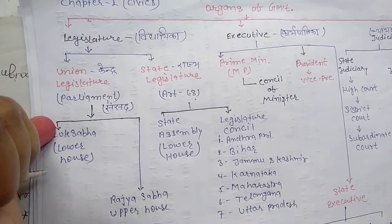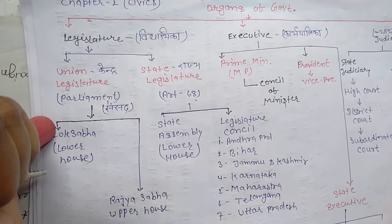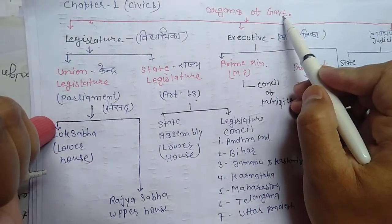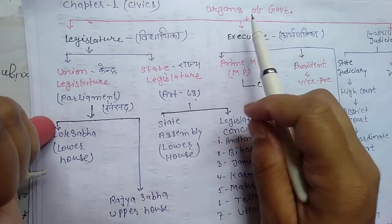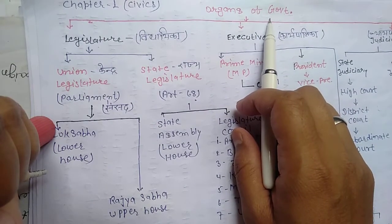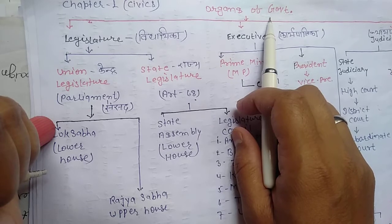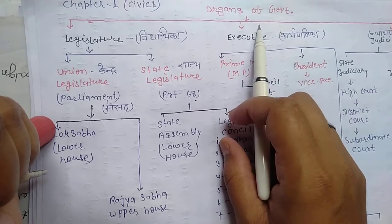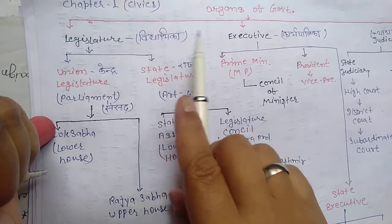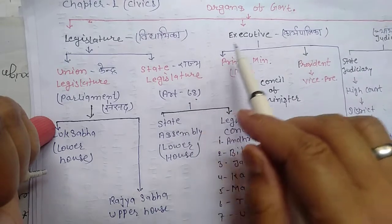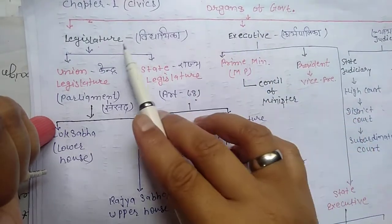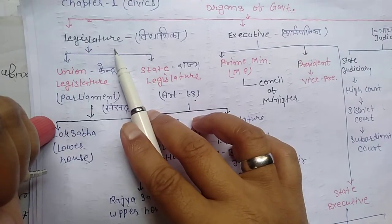Students, firstly we will understand about organs of government. It is very important. There are three organs of government: Legislature, which means the government lawmaking body,